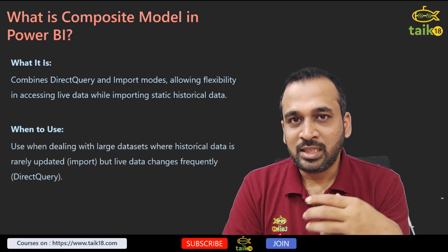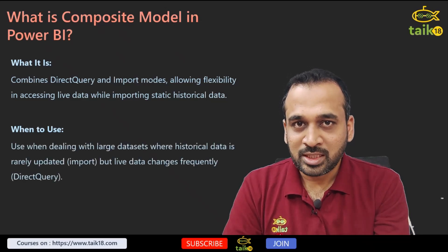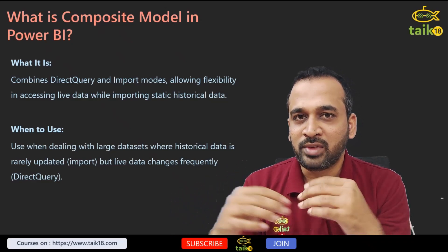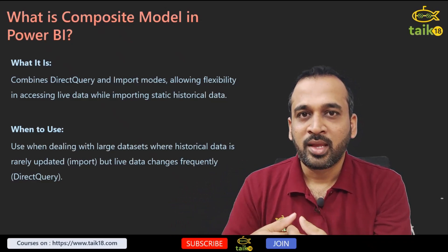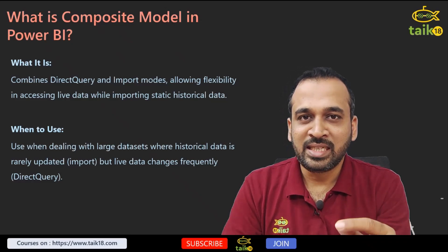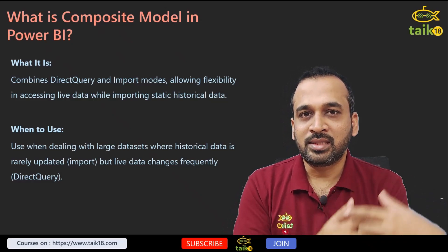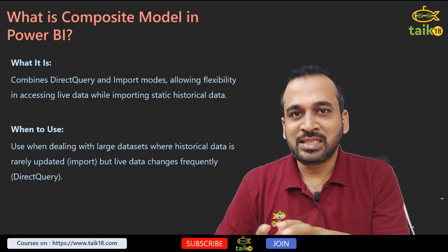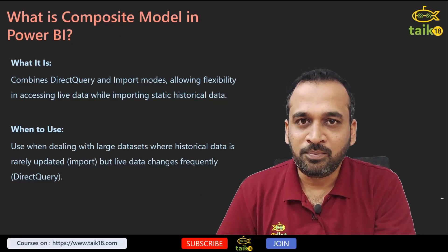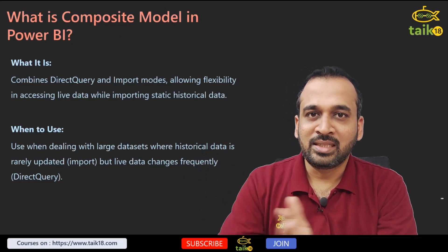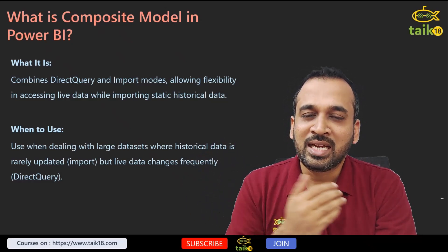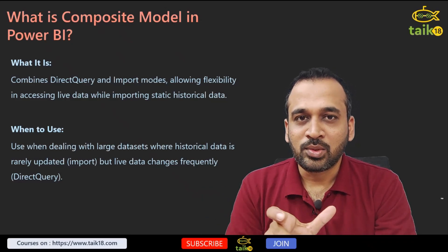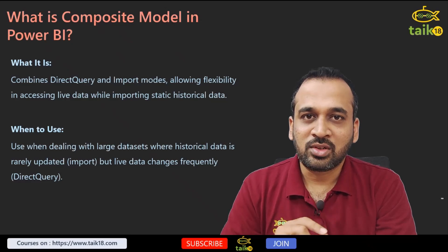When is a composite model useful? It depends on your use case. For example, you have daily transaction production data coming live from production, whereas you have the plan targets for those production lines maintained in an Excel file that doesn't change month to month. The daily transactions come from SQL Server and the plan data comes from the Excel import — combining both to build a report is called a composite model.